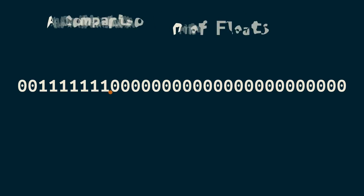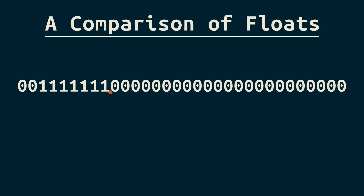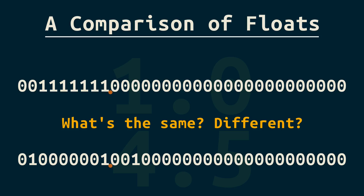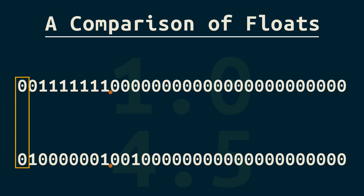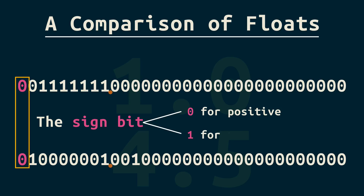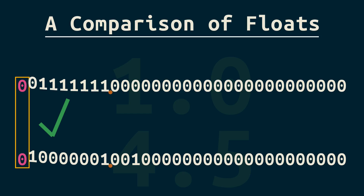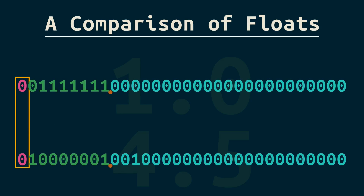Let's explore how these work by comparing two numbers: our initial 1.0 and 4.5. Here's 4.5 as a float. What's the same and what's different between these two? The first bit's the same. If you've studied binary integers, you might know what this first bit does — it's the sign bit. Zero for positive, one for negative. So that's one bit we understand, and only 31 more to go. But it's only two pieces to understand.